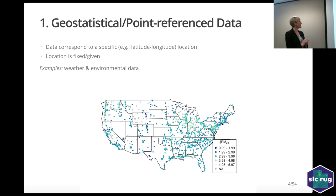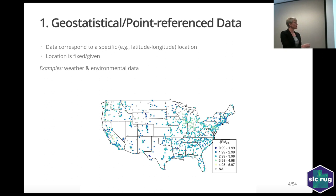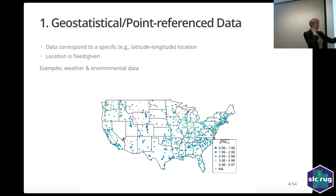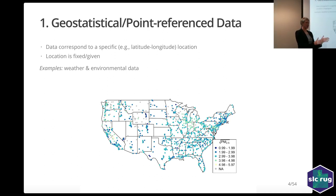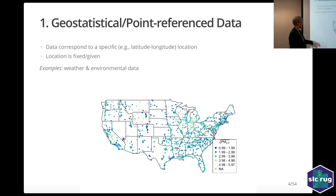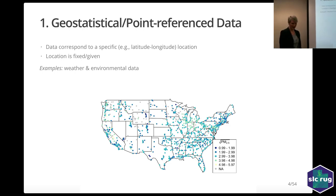The first type of data is geostatistical point-referenced data. This is the most common — you go out, fix a point, and measure data at that point. The location is fixed. This happens a lot in weather and environmental data. Here I've plotted PM 2.5 measurements — the square root of PM 2.5 tends to be more normal, so I've plotted the square root. This data was averaged over about two weeks for a different project. Some NAs appear because we didn't have observations for that particular two-week period. The measurements are scattered across the U.S.